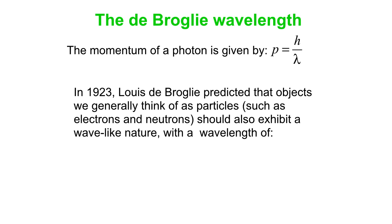like electrons, neutrons, things like that, should also exhibit a wave-like nature. And their wavelength is simply rearranging that equation above: lambda is h over p.